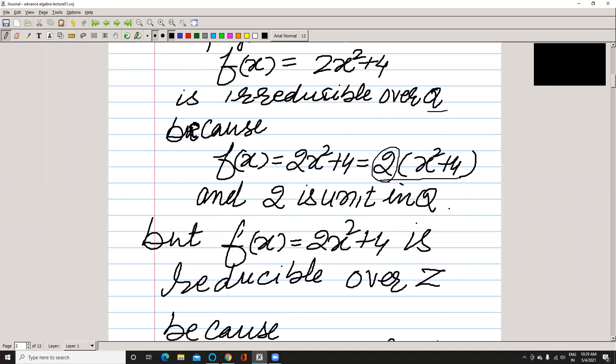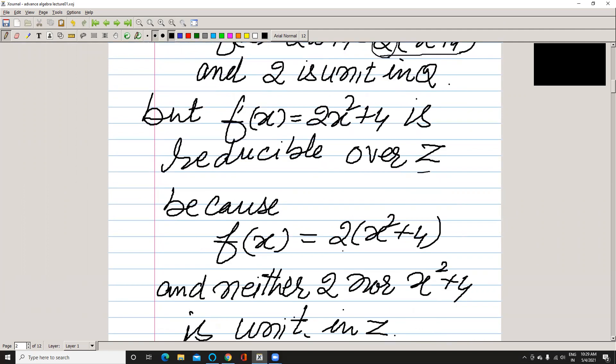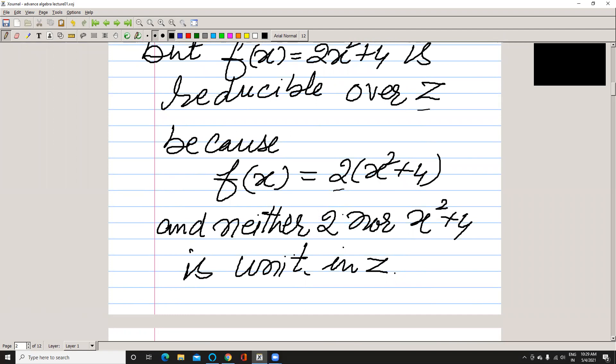Another way, f(x) is irreducible over Z. Why? Because if we write f(x) = 2(x² + 2), this 2 is not a unit in Z. It means that these two are not units, so this f(x) is reducible over Z.